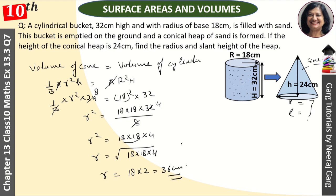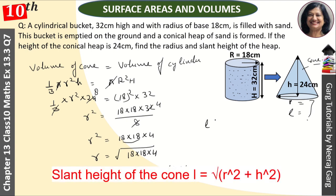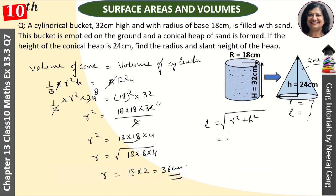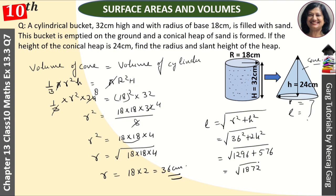Now we need to find the slant height L. The formula for slant height is L = √(r² + h²). So L = √(36² + 24²) = √(1296 + 576) = √1872.